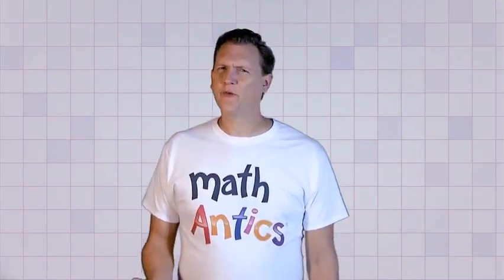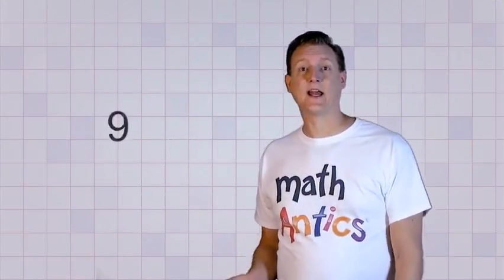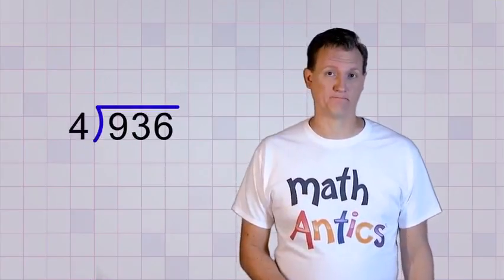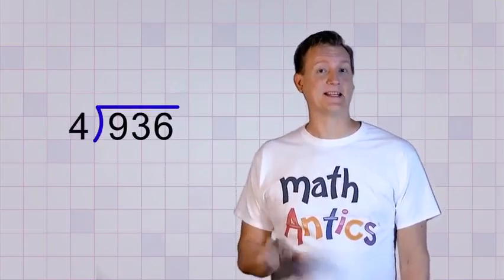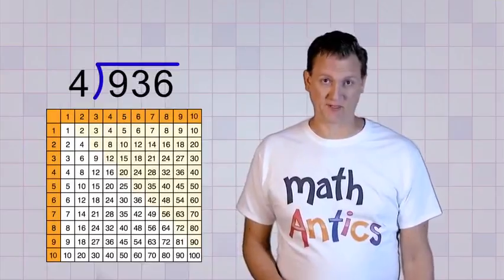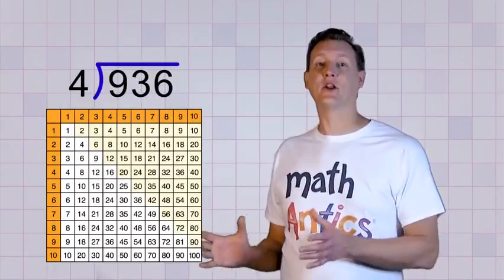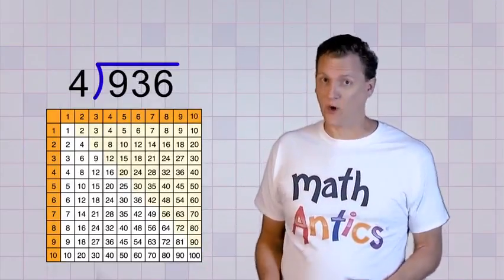When we learned basic one-step division, all of the dividends were small enough that we could just use the multiplication table to help us find the answer. But what if we have a division problem like this? 936 divided by 4. 936 is definitely not on our multiplication table. In fact, there's not anything even close to 936. So what do we do?